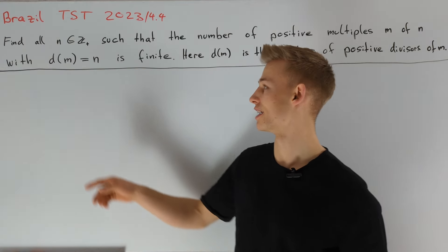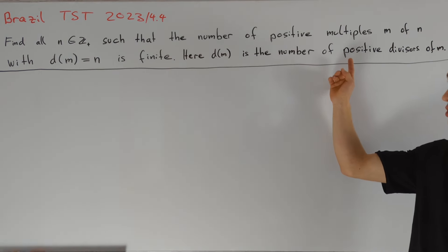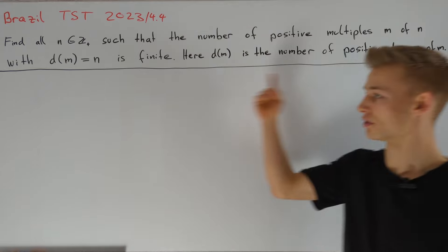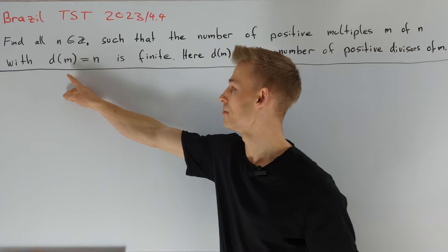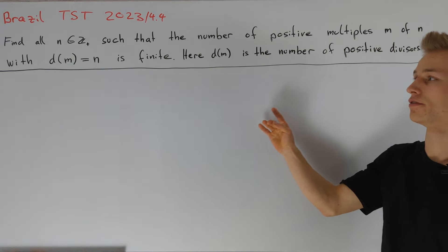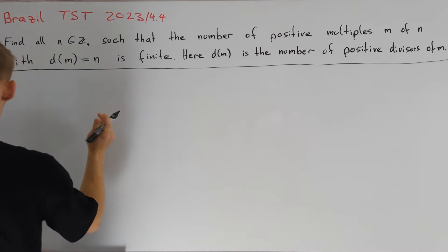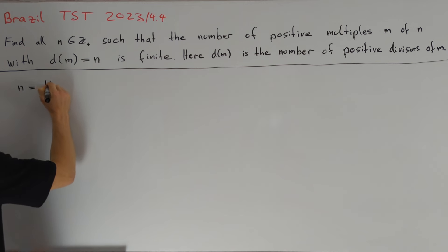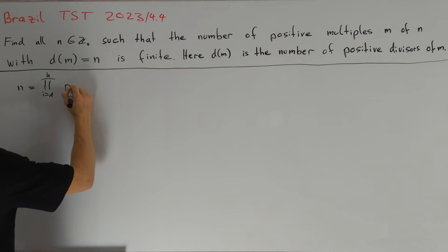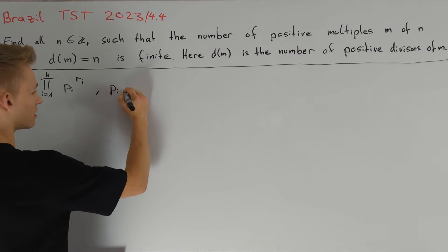We are asked to find all positive integers m such that the number of positive multiples m with d(m) equals n is finite. Here d(m) is the number of positive divisors of m. First we want to write down the prime factorization of such a positive integer n, namely n equals the product for i from 1 up to k of pi to the power of ri, where the pi are pairwise distinct and ri are greater than or equal to 1.